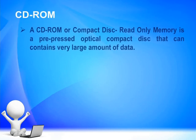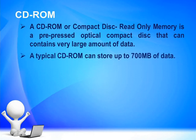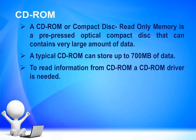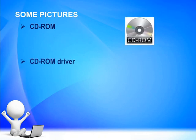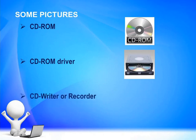CD-ROM, or Compact Disc Read-Only Memory, is a pre-pressed optical compact disc that can contain a very large amount of data. A typical CD-ROM can store up to 700 megabytes of data. To read information from a CD-ROM, a CD-ROM drive is needed. To write onto or erase from the CD-ROM, we need a CD-writer or recorder. Some pictures are there of CD-ROM, CD-ROM drive, and CD-writer or recorder.